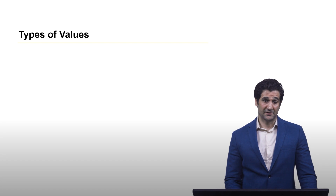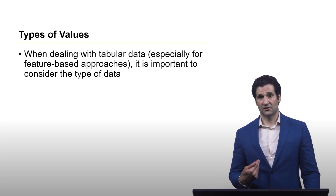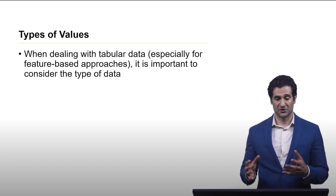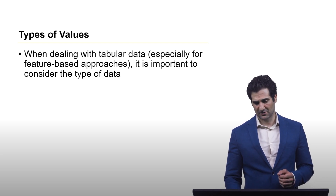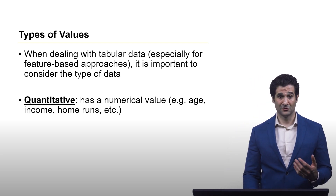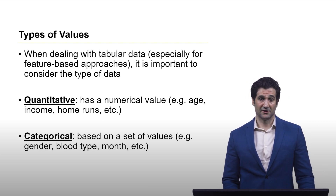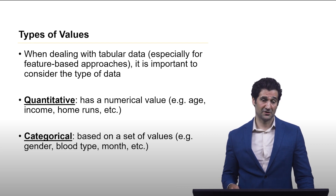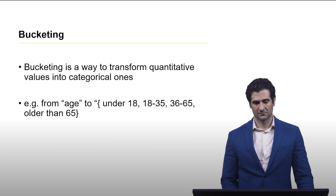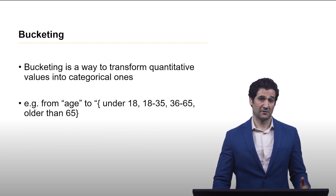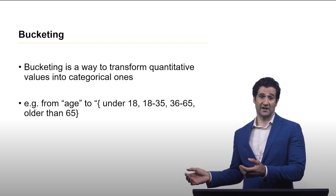Now let's talk about the different types of values data can have. This is going to be really focused on tabular data, which is what you're generally going to use for feature-based approaches. You're going to have two big categories: quantitative, which is numerical information, and categorical, which is information that aligns with a set of categories. One thing you can do — and this may be necessary from time to time — is to bucket quantitative data, creating categorical data.